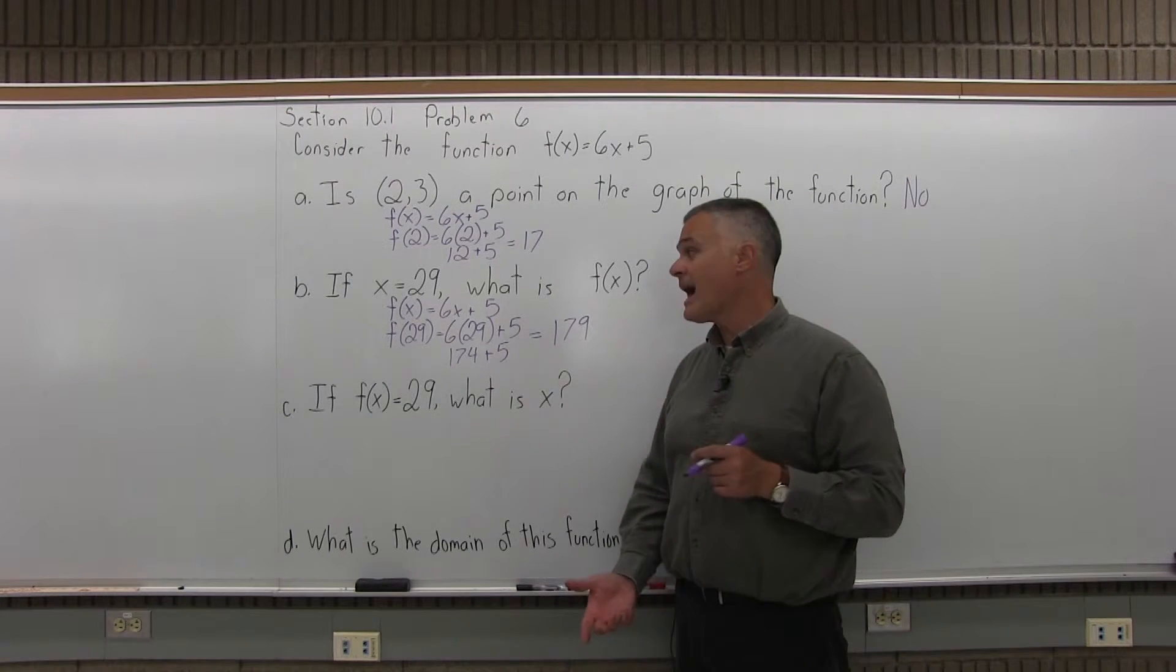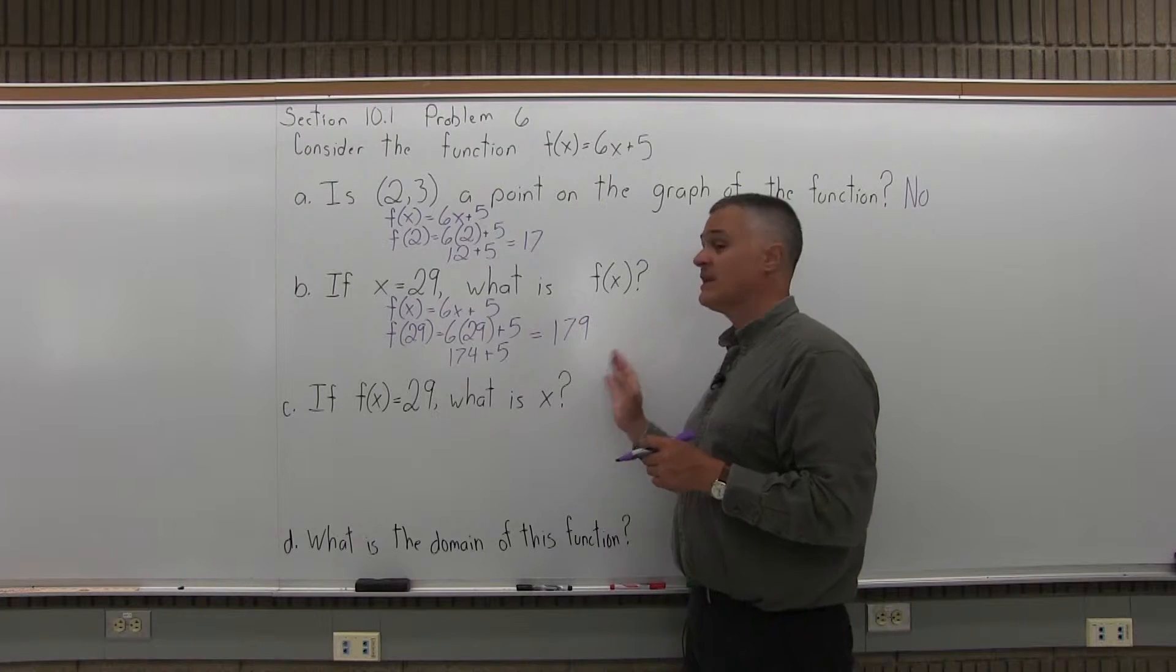So if you put in a 29, you get out a 179. And again, if you could see the graph, the point over 29 up 179 is a point on the graph.